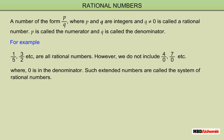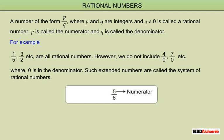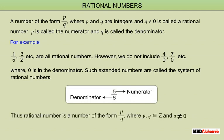Such extended numbers form the system of rational numbers. As another example, 5 upon 6 is a rational number in which 5 is the numerator and 6 is the denominator. Thus, a rational number is a number of the form p upon q where p and q are integers and q is not equal to 0.